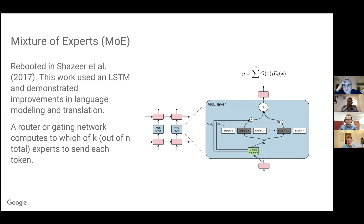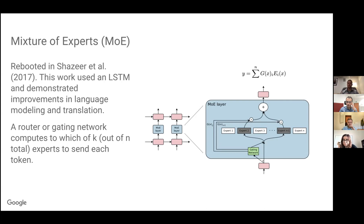Question from Denise: Whenever we have a discrete decision inside a network, it poses a problem for gradient calculations. How does the gating not cause a problem for backprop? Answer: We send the token to the gating network, which computes dot products and softmax. We do a top-K or top-1 operation — at this point it's not differentiable. The hack we use is to multiply the gating network probability for the selected expert by the expert computation output. This makes everything differentiable end to end and works well in practice.